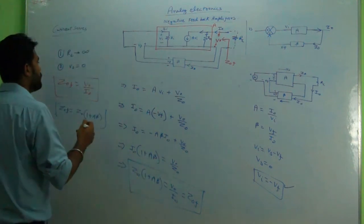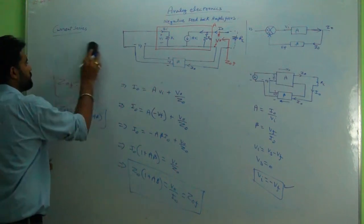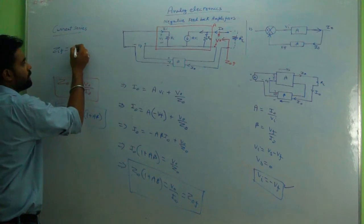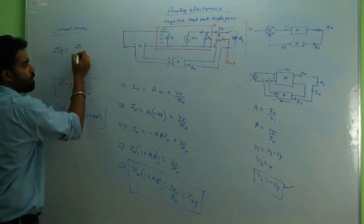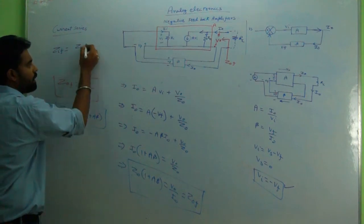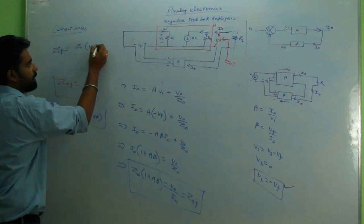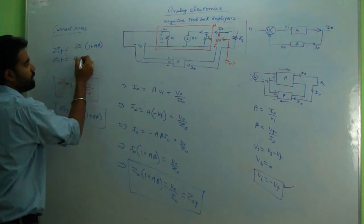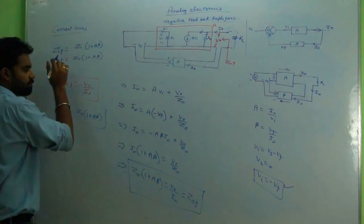We come down to the conclusion that in current series feedback, Z_if equals Z_i into (1 plus A beta), and Z_of equals Z_naught into (1 plus A beta). That is, in both cases with feedback, impedances are increasing, input and output.